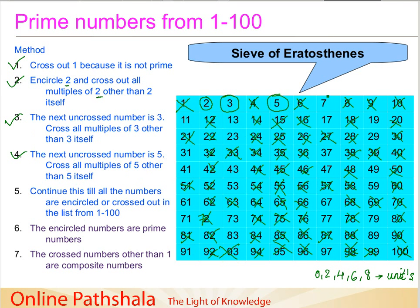I will be doing it in a fast fashion now for the sake of time. The next uncrossed number is 7. I am just scanning through whether I need to cancel any number here. Going through the list — 77 needs to be crossed out as a multiple of 7, and 91 as well. Then we go for 11.